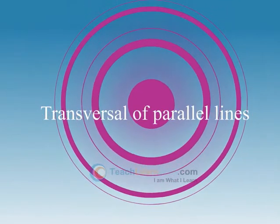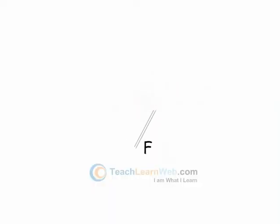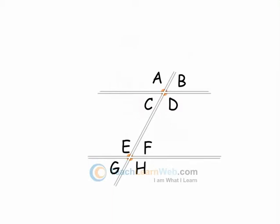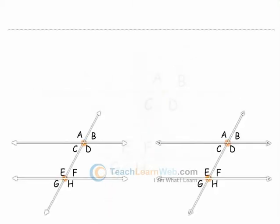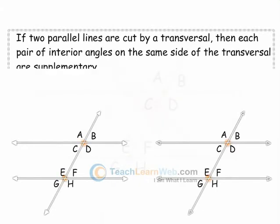Transversal of Parallel Lines. If two parallel lines are cut by a transversal, each pair of corresponding angles is equal in measure. Each pair of alternate interior angles are equal. Each pair of interior angles on the same side of the transversal are supplementary.